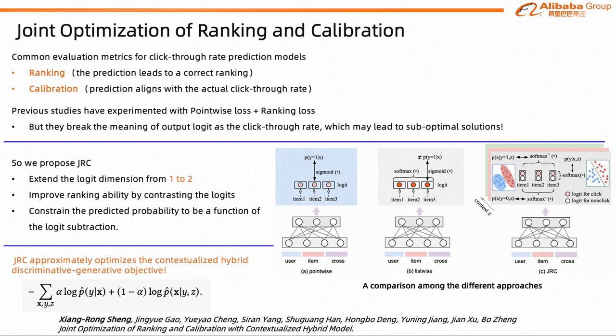To address this issue, we propose JRC that can jointly optimize the ranking and calibration abilities. JRC improves the ranking ability by contrasting the logits value for samples with different labels, and also constrains the predicted probability to be a function of the logits subtraction.